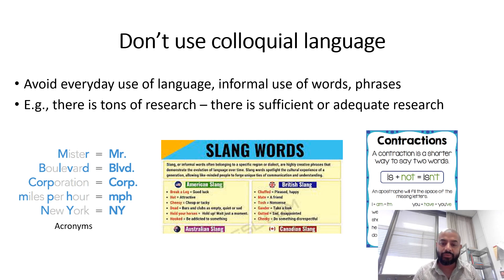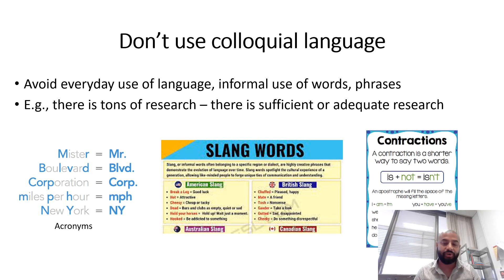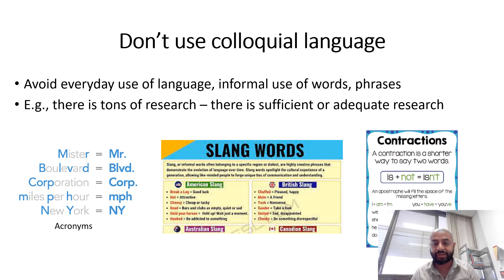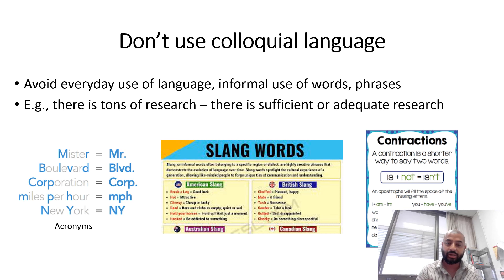Also avoid using slang words. In Australia, for example, 'daggy' means unkempt or poorly presented — instead, write 'not properly presented.' Every language and culture has its own slang, so avoid it. Avoid contractions as well: do not write 'isn't' — write 'is not'; do not write 'haven't' — write 'have not.' These contracted forms should not appear in academic English.